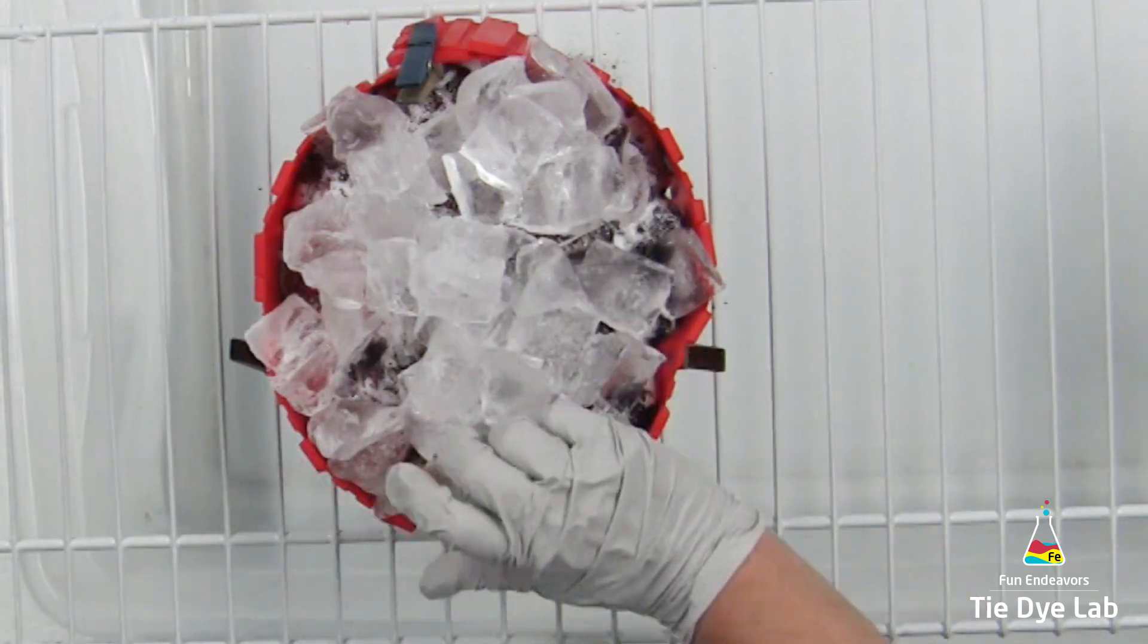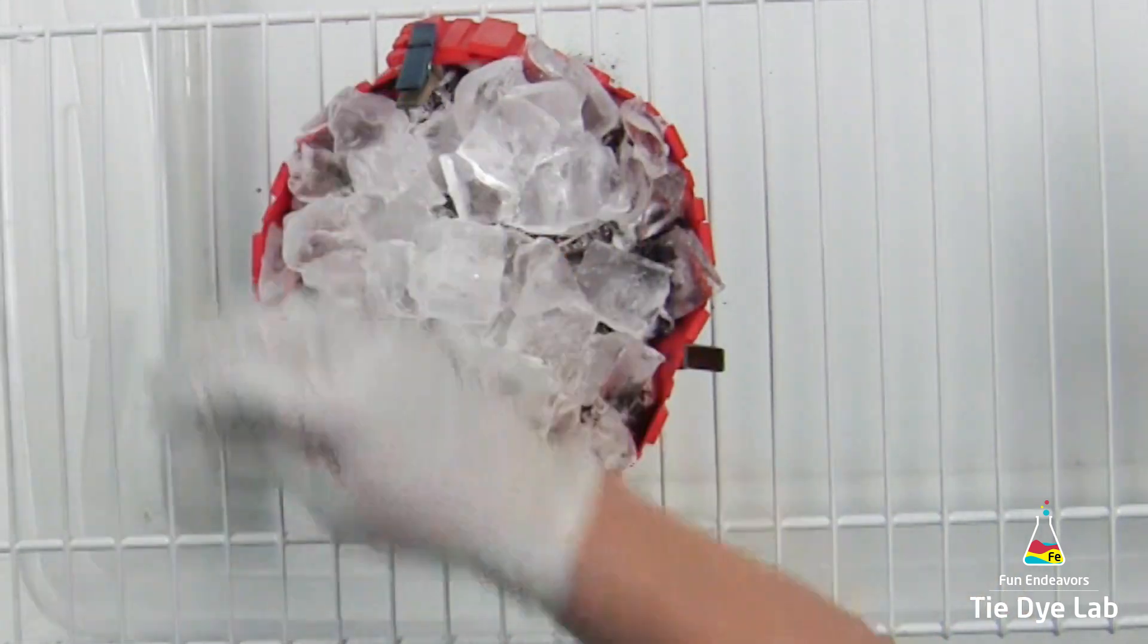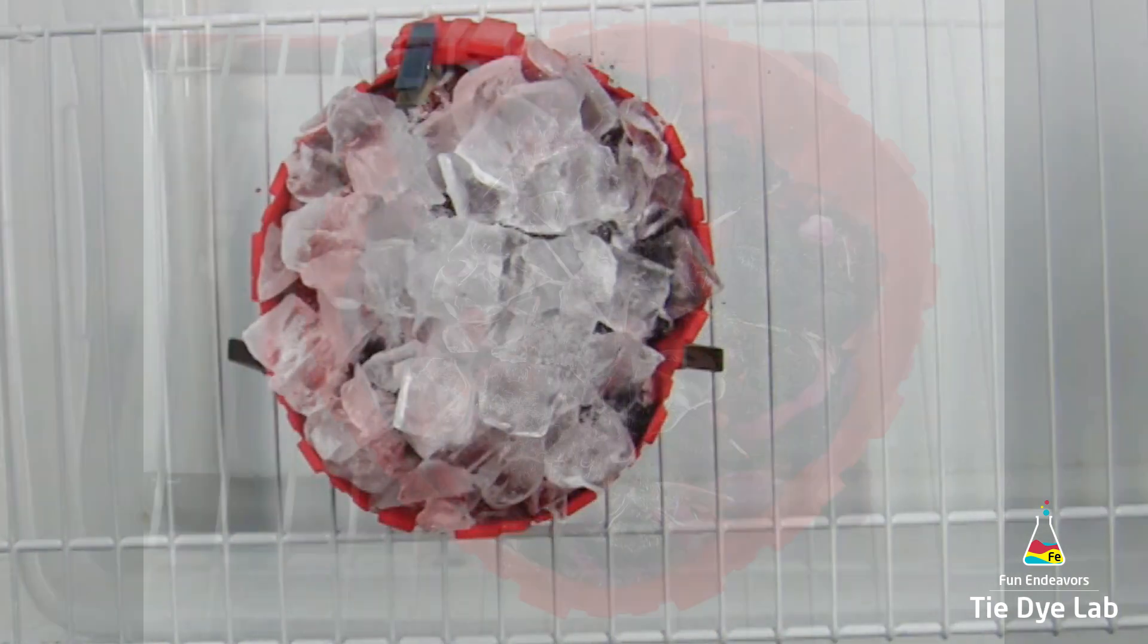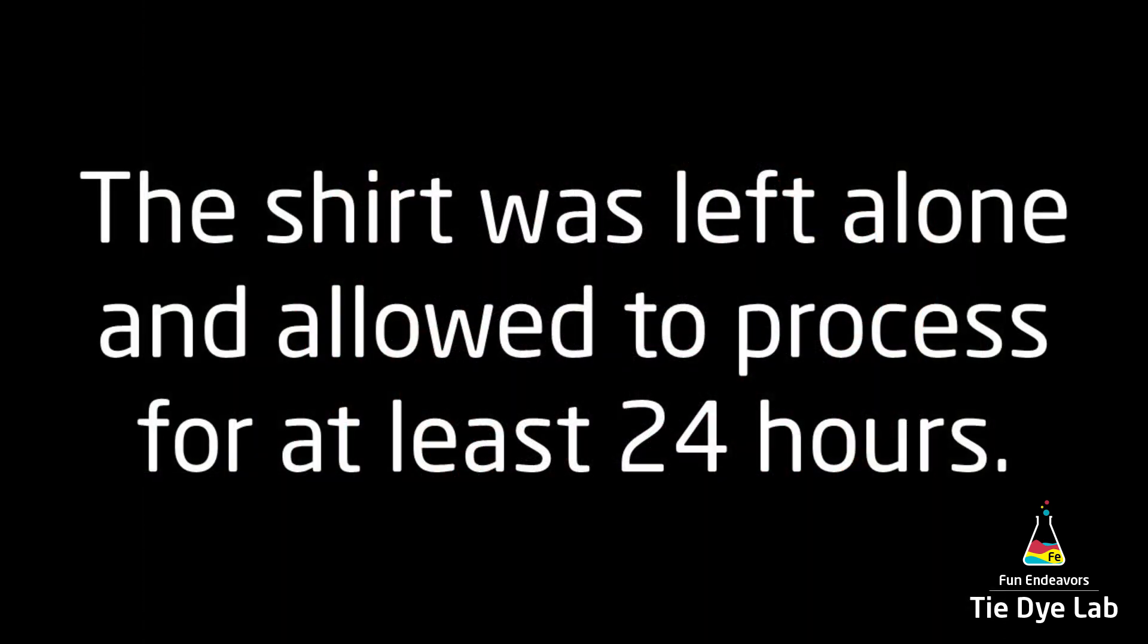After this first layer of ice melts, there was still quite a bit of dye remaining on top of the shirt so I went ahead and added a second layer of ice. After the second layer of ice melted I allowed the shirt to process for 24 hours before I began rinsing.